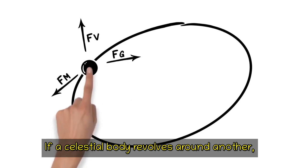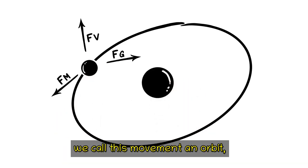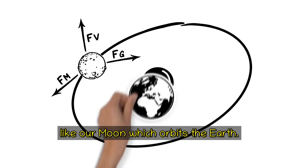If a celestial body revolves around another, we call this movement an orbit, like our Moon, which orbits the Earth.